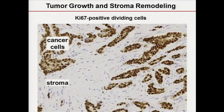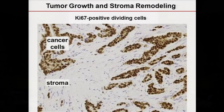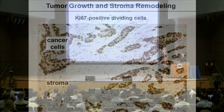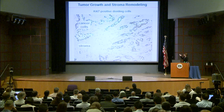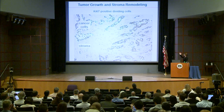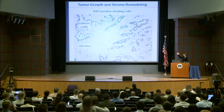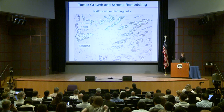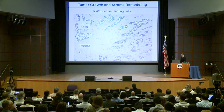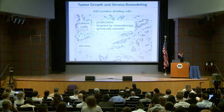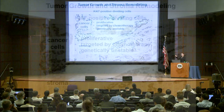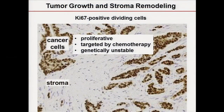One important distinction between cancer cells and stroma is that cancer cells are highly proliferative and stroma is not. Ki67 is a marker of proliferation — you can see the cancer cells are highly proliferative, but some nuclei in the white space are not stained with the marker because they are not proliferative. This is the stroma. Cancer cells are proliferative and this is also what is typically targeted with chemotherapy, because most chemotherapies target proliferating cells.